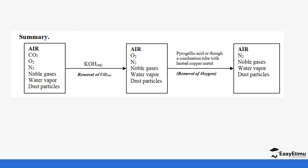When air is passed through concentrated potassium hydroxide, carbon dioxide is removed, leaving oxygen, nitrogen, noble gases, water vapour, and dust particles. When passed through the combustion tube containing copper metal — or through pyrogallic acid — oxygen is removed. What remains is nitrogen, but it is not pure: it still contains noble gases, water vapour, and dust particles.